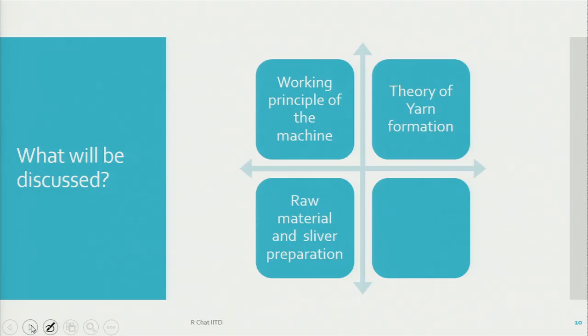We will discuss about the differences in sliver preparation because the requirements are different. Then we will also discuss process parameters and process stability. Process parameters are very important to know, and their significance also needs to be understood, because an optimum combination of process parameters can only give us stability of the process. Otherwise, the process may behave in a very erratic manner.